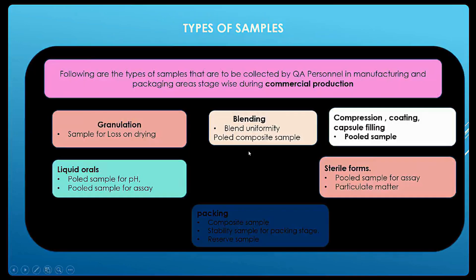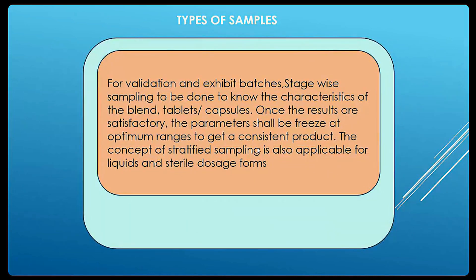For commercial batches in manufacturing and packaging, all products are introduced as per market demand. Regulatory body guidelines establish requirements for validation or exhibit batches — a minimum of three consecutive batches are executed, and parameters are noted. Manufacturing and packaging parameters such as temperature at each stage are recorded in the final batch manufacturing record. The validation concept will be discussed in coming sessions.